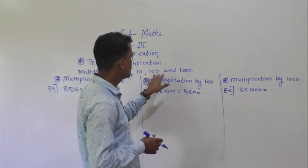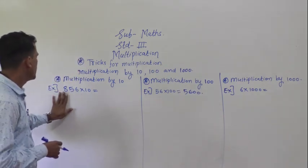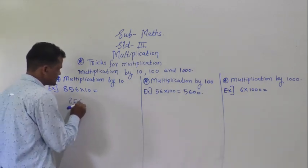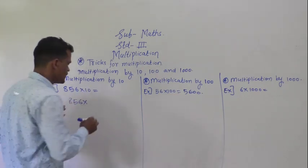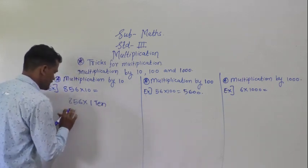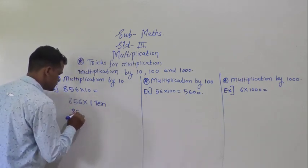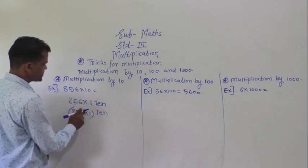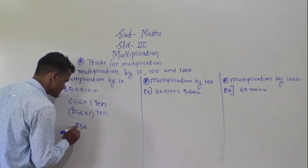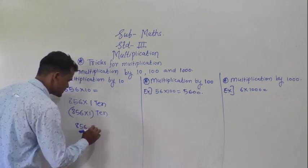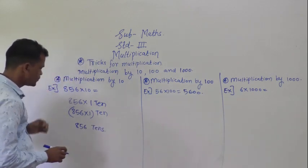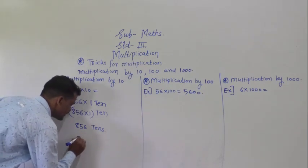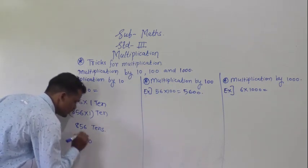See how to do multiplication by 10, 100, and 1000. First example: 856 multiplied by 10. So 856 into 10 means we write 856 into 1, and then 10 outside. If you multiply 856 by 1 you get 856, and then put 10 at the right of the number.